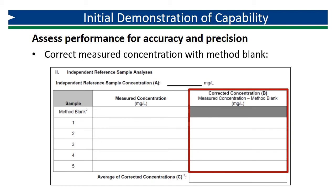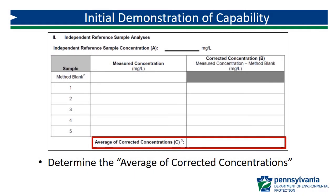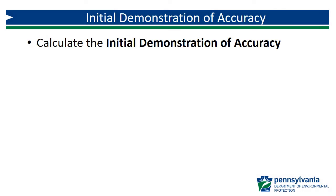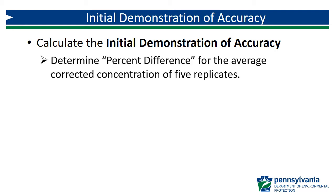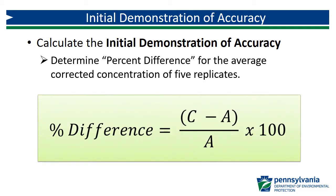In the first table, you calculate the corrected concentration by subtracting the method blank value. Next, determine the average of corrected concentrations by adding each of the corrected concentration values and dividing by 5. The last step on page 1 of the IDC form is the calculation for the initial demonstration of accuracy — we will determine the percent difference for the average of corrected concentrations of the 5 replicates. The form walks you through this, so let's take a closer look.